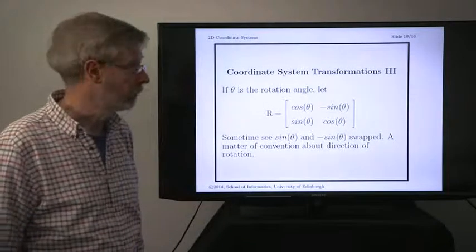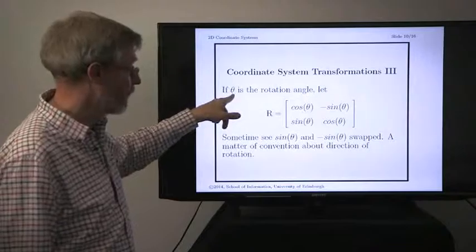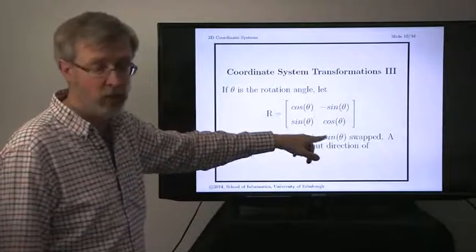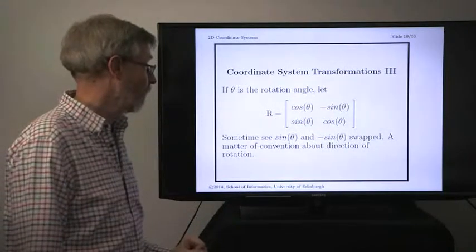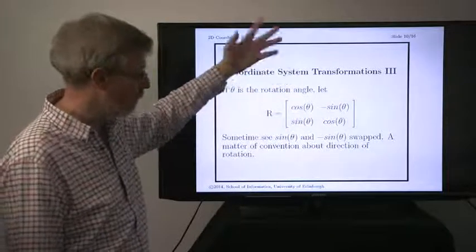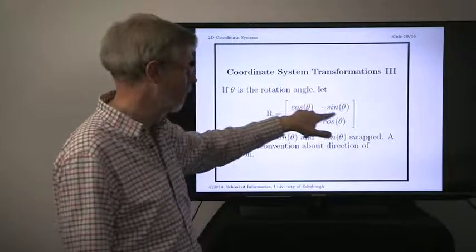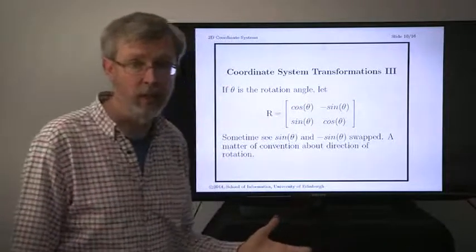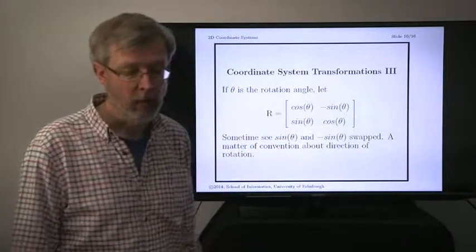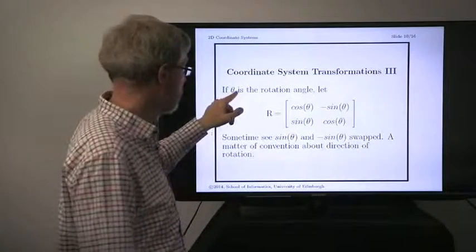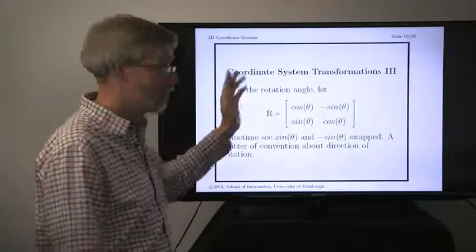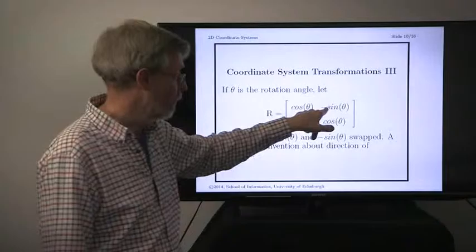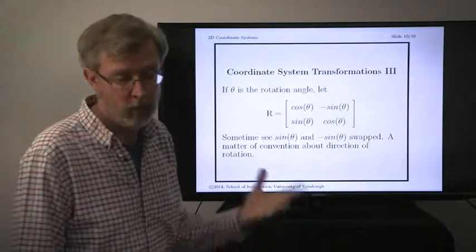The more complicated bit is the rotation. If theta is our rotation angle, we represent rotation in terms of a rotation matrix. The values in that matrix are the cosines and sines — the cosines are always on the main diagonal and the sines are off the main diagonal, with one of those sines having a minus sign. Sometimes you might see the minus sign in different positions — that's largely a matter of convention. Some people say theta is a clockwise rotation; some say counterclockwise. If you change the convention, you move the minus sign. So whenever you're working, be sure to find out what convention you're using.